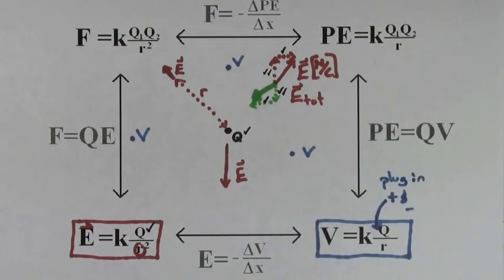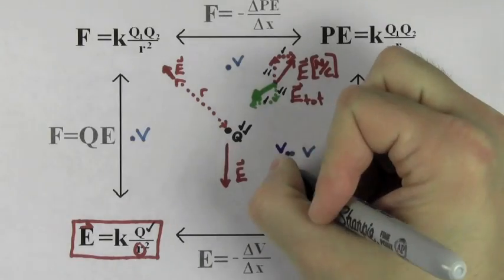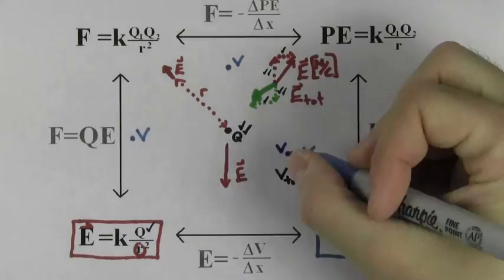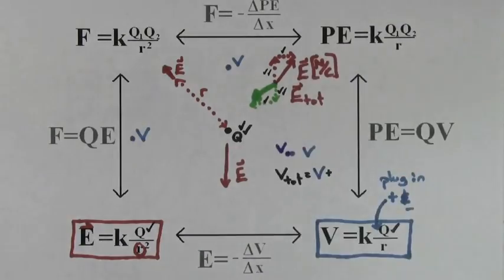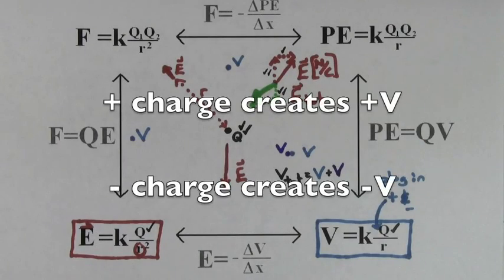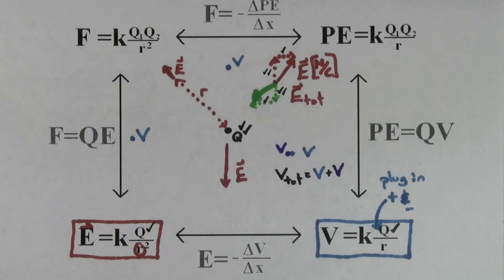You literally just plug in the plus and minus signs for the charge and add up the contributions from all the charges. A positive charge will always create a positive electric potential and a negative charge will always create a negative electric potential. A negative electric potential does not mean it points down or left — it just means that the number for the electric potential is a negative number.